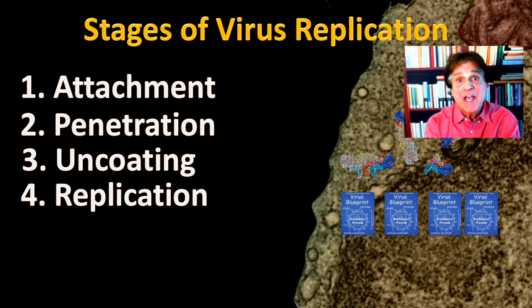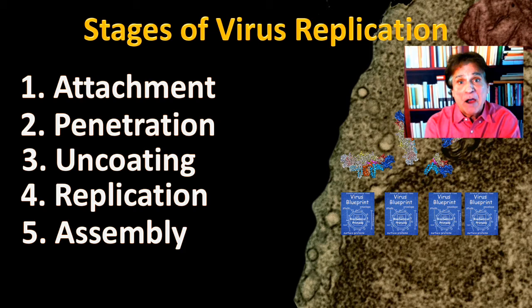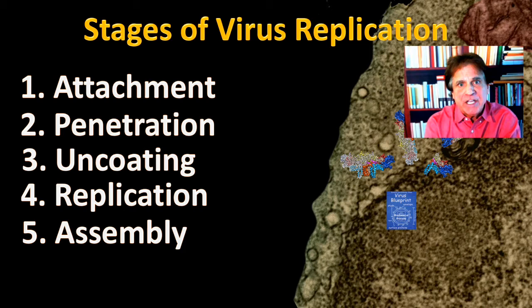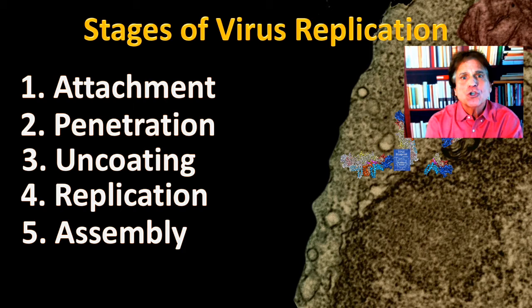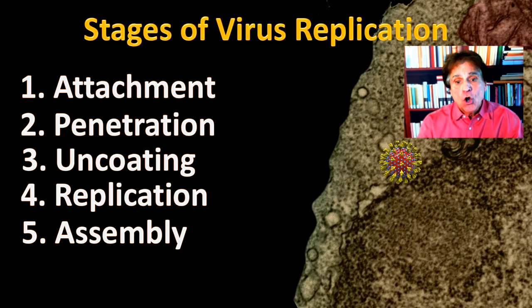Once the raw materials for making new viruses have been manufactured, it's time to put them together into the new virions, and that is done in a stage called assembly. In the case of SARS-CoV-2, the blueprints and the proteins come together and they form the virus particle. This virus particle also uses a piece of the membrane within the cell to wrap itself and then stud it with the SARS-CoV-2 proteins.